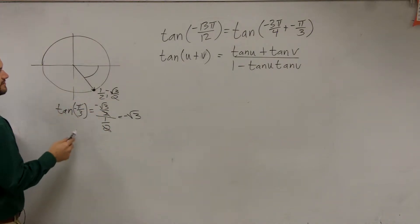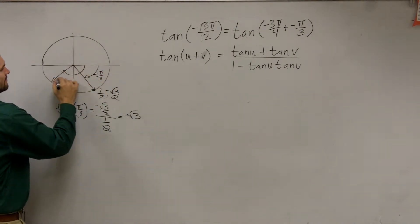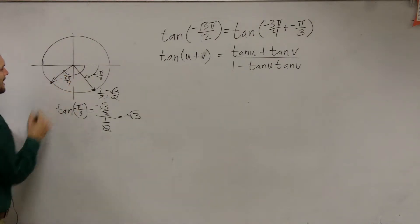Then we need to determine the tangent of negative 3π over 4, which is going to be right there. That coordinate point is negative square root of 2 over 2 comma negative square root of 2 over 2.